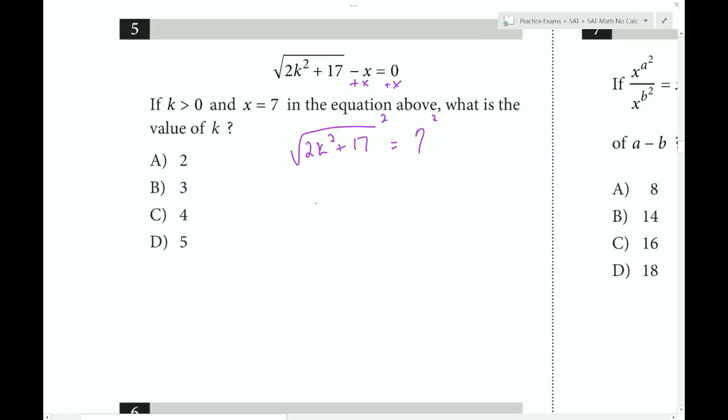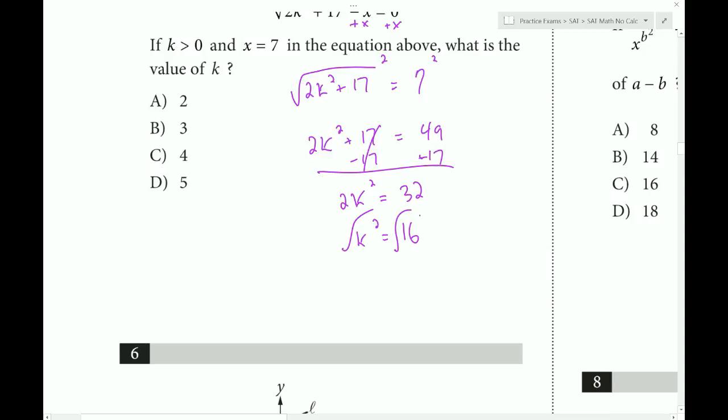Square both sides to get rid of the square root: 2k squared plus 17 equals 49. Subtract 17 from both sides to get 2k squared equals 32. Divide by 2 to get k squared equals 16. Square root both sides to get k equals 4, and don't forget the plus or minus.